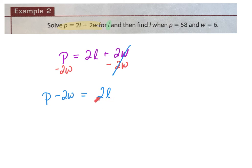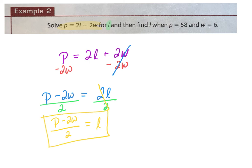That's multiplication. So since that's multiplication, what do I do to get rid of it? Divide. When I divide the left-hand side, you need to draw that line underneath all of it — it is dividing everything by 2. On the right-hand side, the 2s cancel out to 1L. On the left-hand side, I have P minus 2W over 2. So this is my literal equation solved for L.